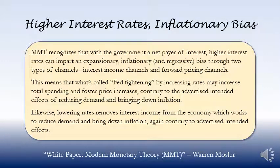MMT recognizes that with the government a net payer of interest, higher interest rates can impart an expansionary, inflationary, and regressive bias through two types of channels: interest income channels and forward pricing channels. This means that what's called Fed tightening by increasing rates may increase total spending and foster price increases, contrary to the advertised intended effects of reducing demand and bringing down inflation.